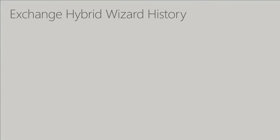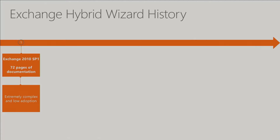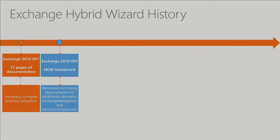For the hybrid wizard history — how many have done the 72-page documentation on configuring hybrid? A few hands go up every time I ask. It was awful. A group of Exchange Masters went through what was then 70 pages of content and couldn't get it configured. We were missing the last two pages, finally got those, and then created a wizard because it was near impossible. That was introduced in Exchange 2010 SP2.